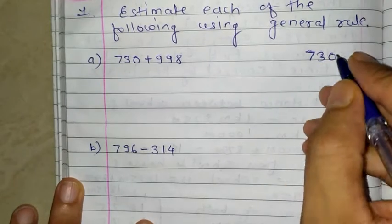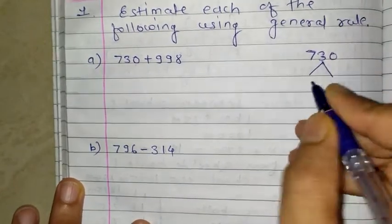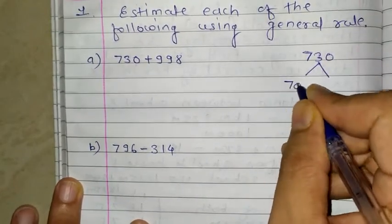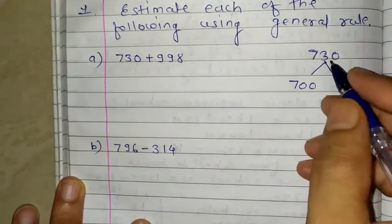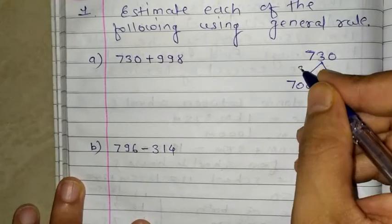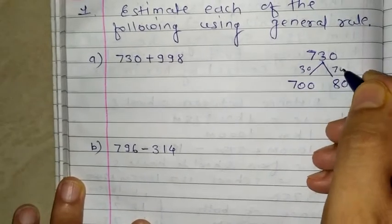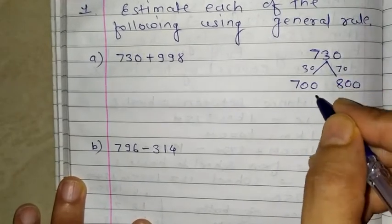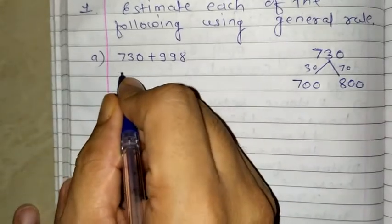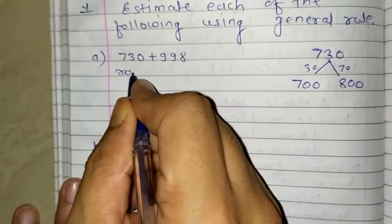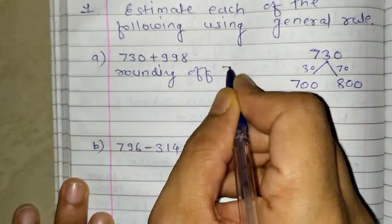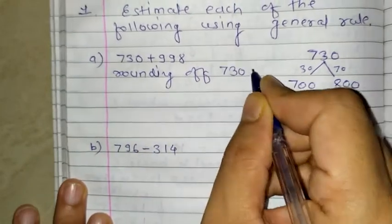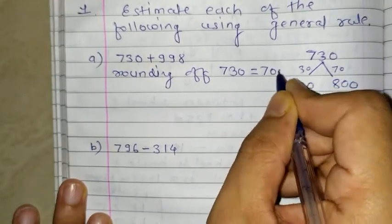This 730 is in between 700 and 800. If you check the difference, it is 30 and here it is 70. So this number is closer to 700.